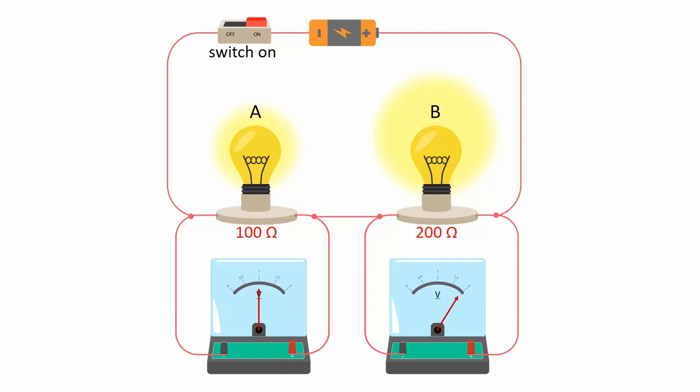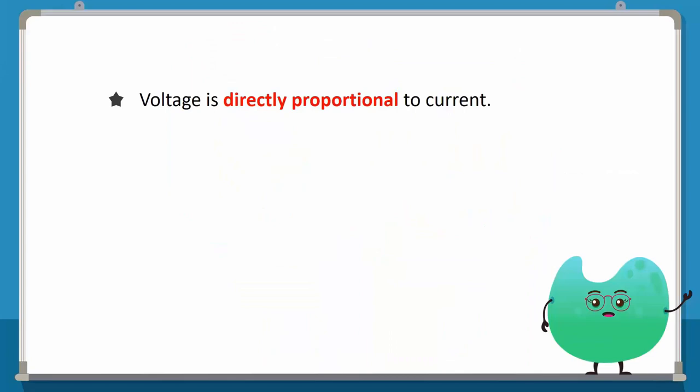We can conclude that the higher the resistance, the higher the voltage. In other words, voltage and resistance are directly proportional.